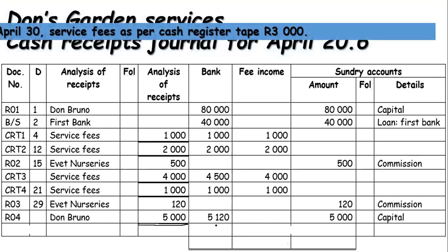The last transaction on the 30th: service fees as per cash register tape amounting to 3,000 rand. CRT5, date the 30th, service fees amounting to 3,000 rand. We underline to show it is deposited into the bank, and that is fee income.